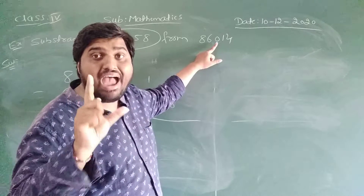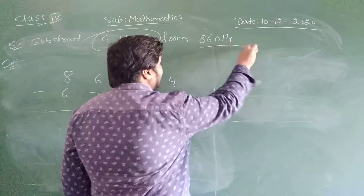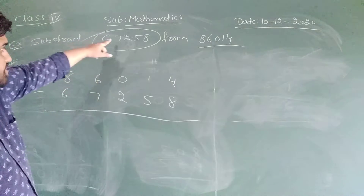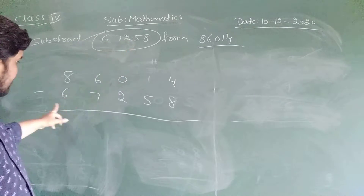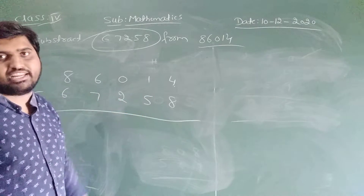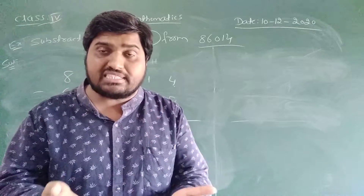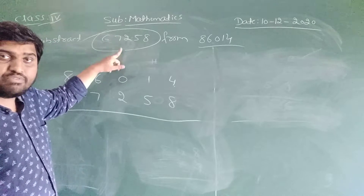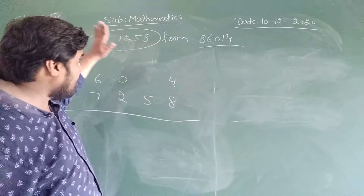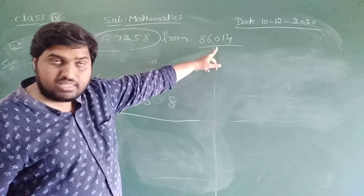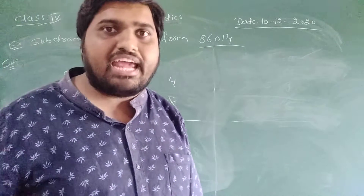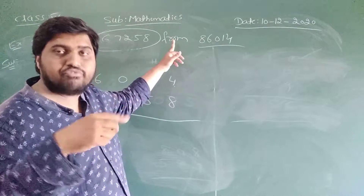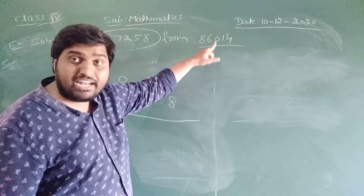Therefore children, you have to write this number first. Write 86,040. Minus — in this number we are going to subtract 67,258, that's why I wrote minus 67,258. Some students will write the first number first — that's not wrong — but compulsory, we have to write the top number first because we are subtracting from 86,040. The rule is: after 'from', whichever number is there, that number you have to write first.